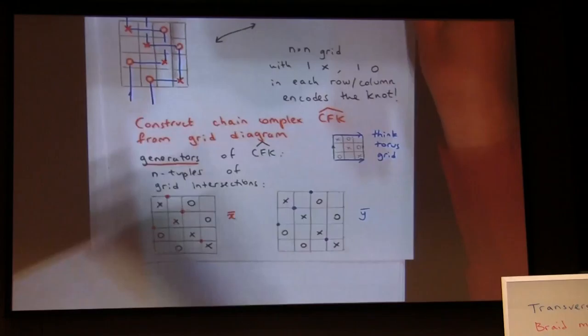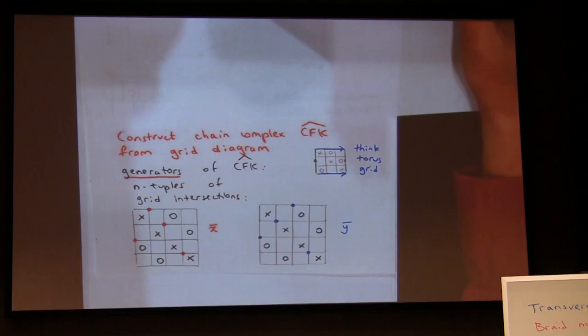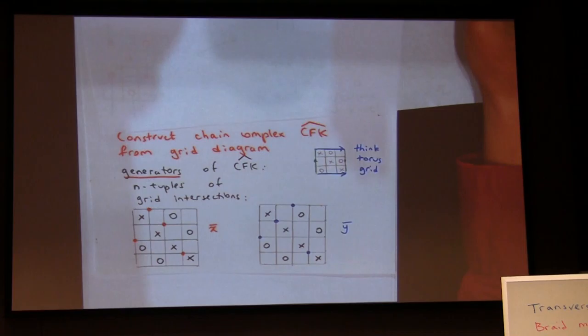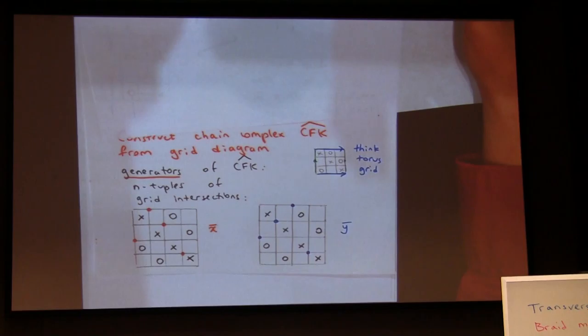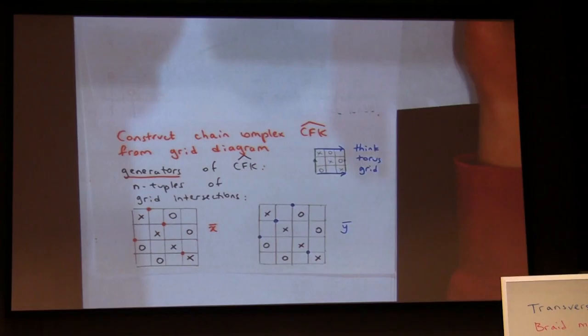From a grid diagram, we construct the homology theory — a chain complex. The generators are n-tuples of grid intersections: you pick one dot on each horizontal line and one on each vertical line. You're actually thinking of the grid as a torus, identifying top and bottom and the two sides. The red and blue examples are two generators of the chain complex — you get n-factorial such generators from a given grid picture.